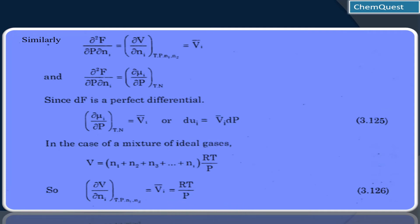Now this is another thermodynamic expression: ∂²F / (∂P ∂nᵢ). This represents the double differentiation of free energy with respect to a small change in pressure and component i. This is actually equal to ∂V/∂nᵢ at constant temperature, pressure, and constant number of moles of constituents 1 and 2, and this is further equal to the partial molar volume V̄ᵢ.